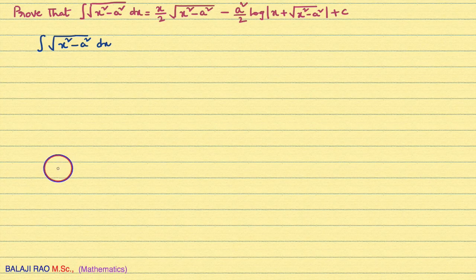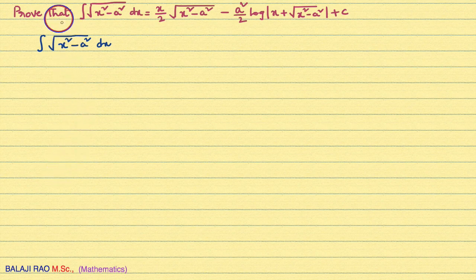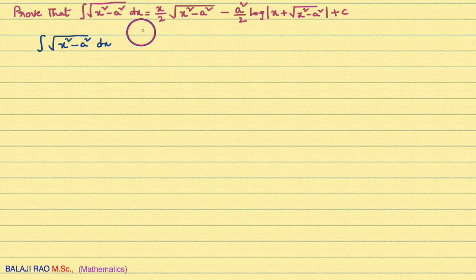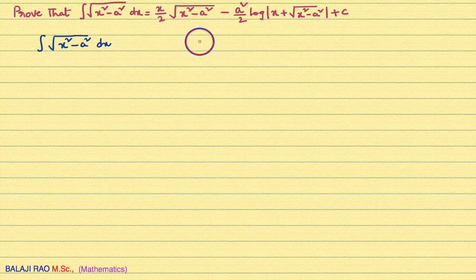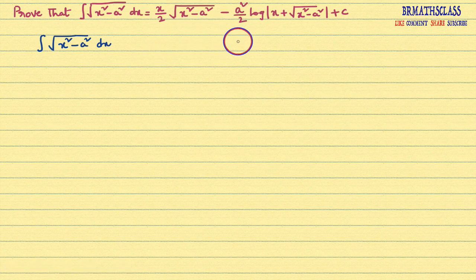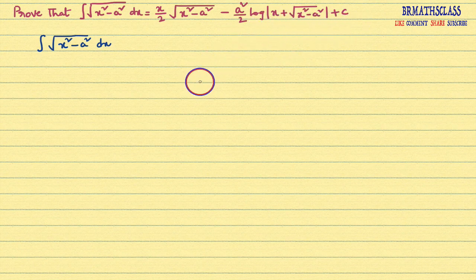Hi friends, I am Balaji Rao. Welcome to BRMAX class. In this class we will prove that integral of root over x square minus a square dx equals x by 2 into root over x square minus a square minus a square by 2 into log mod x plus root over x square minus a square plus c.